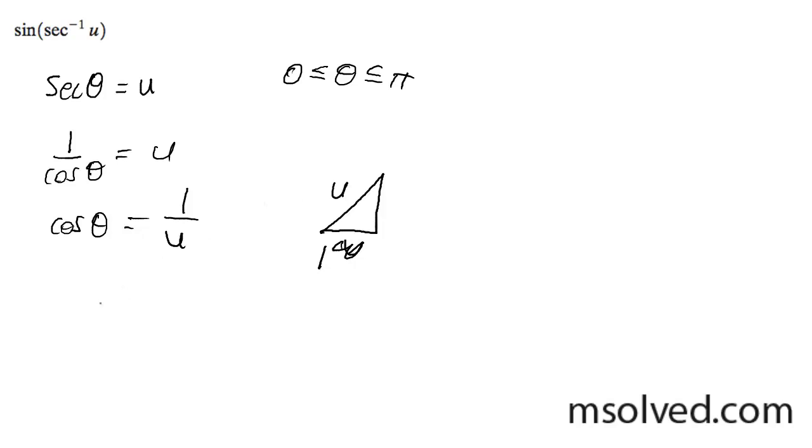And then what I'm going to do is find my y component here. My y component's simply going to be y squared equals u squared minus 1, or y equals the square root of u squared minus 1. And then what happens next is now I can rewrite everything.